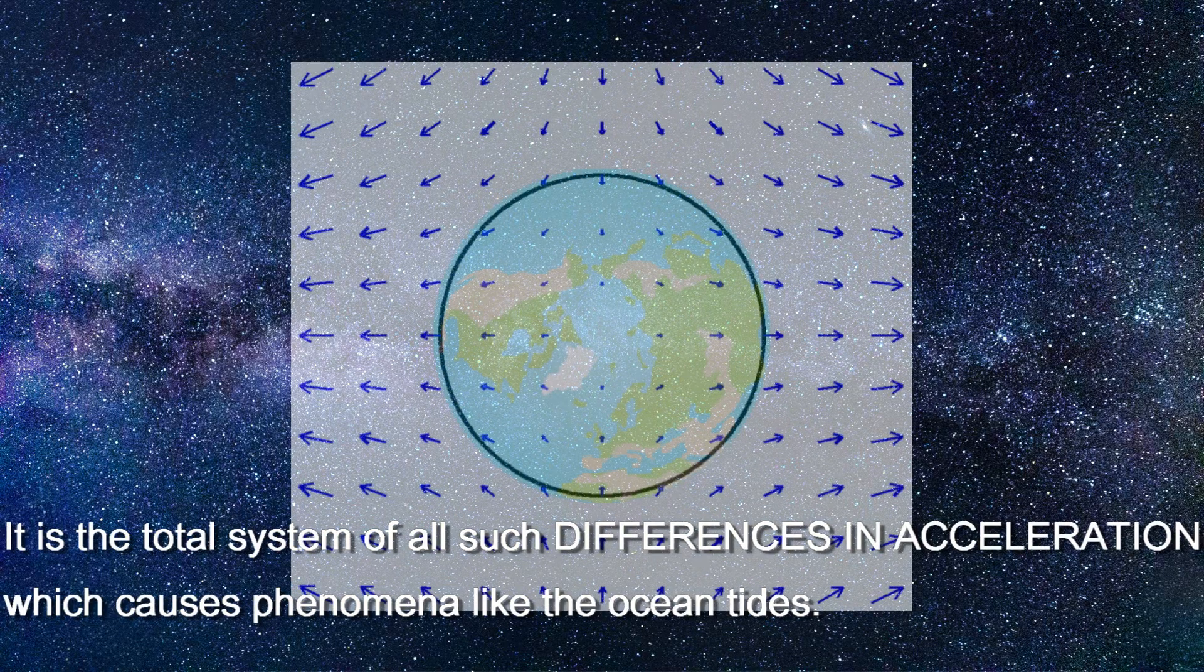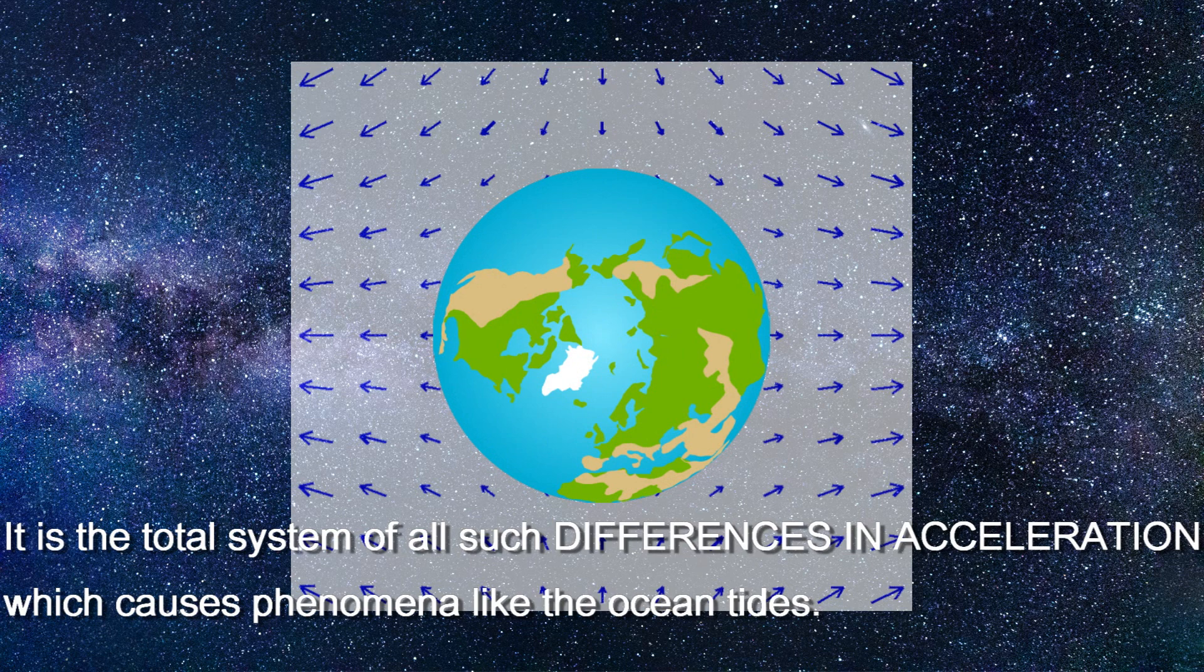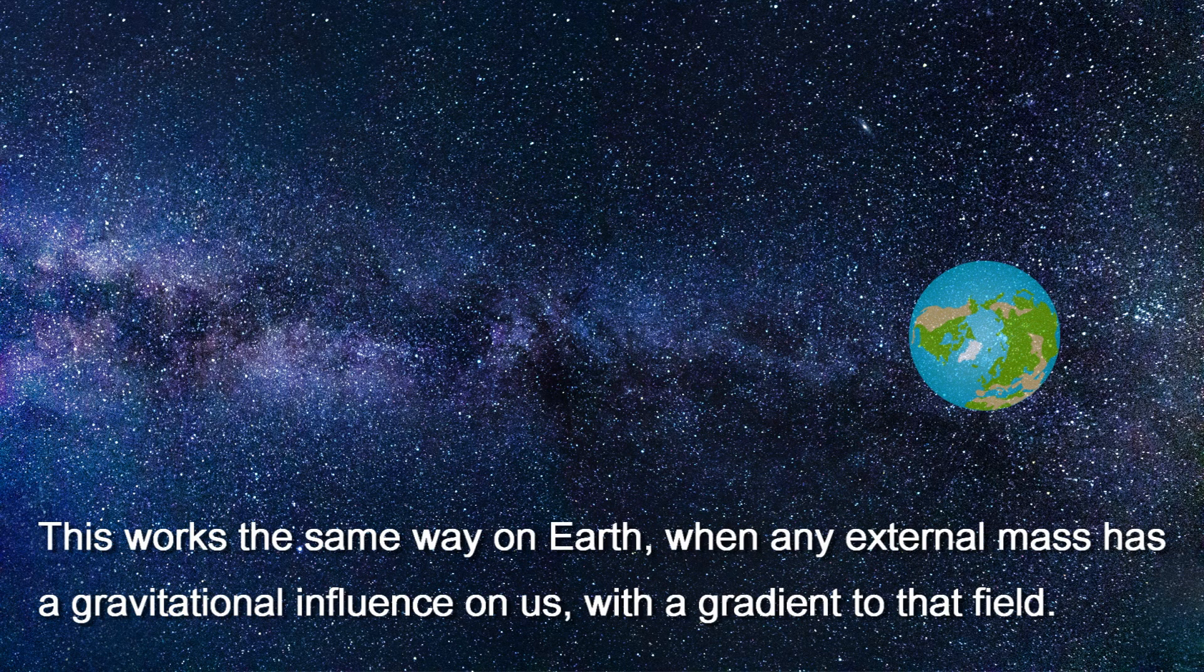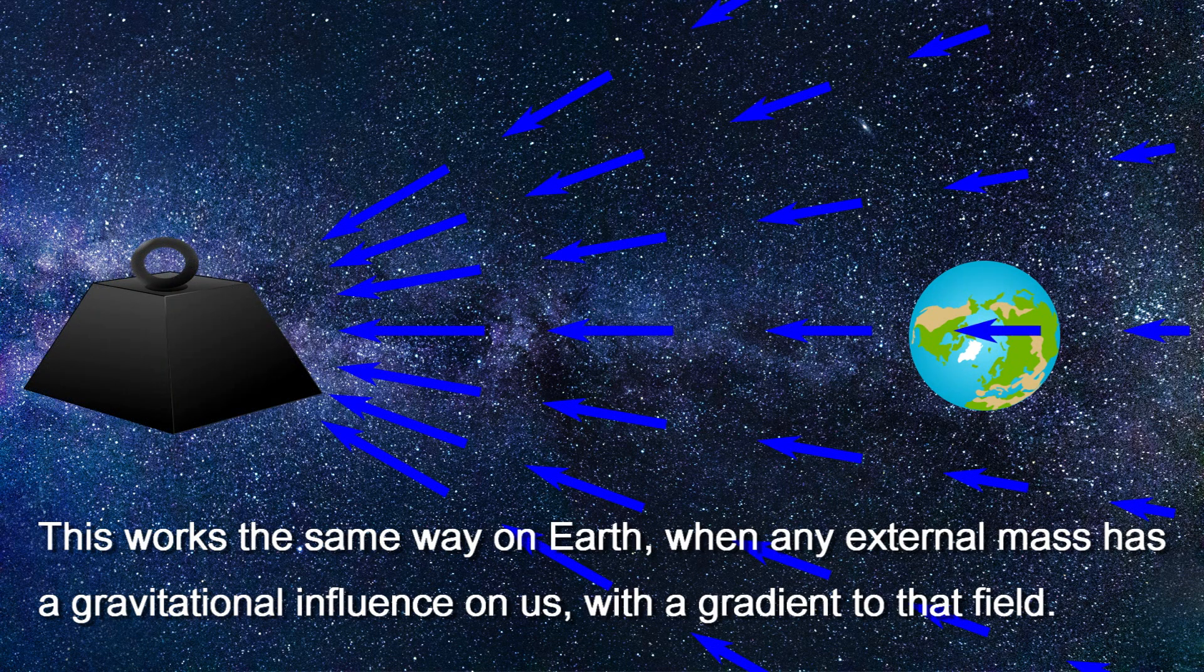It's the total system of all such differences in acceleration which causes phenomena like the ocean tides. This works the same way on Earth when any external mass has a gravitational influence on us, with a gradient to that field.